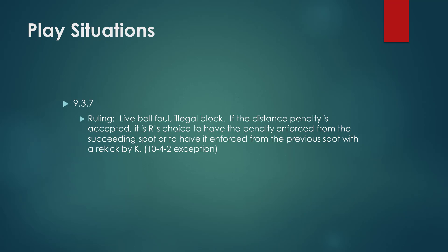If the distance penalty is accepted, it is R's choice to have the penalty enforced from the succeeding spot, or enforced from the previous spot with a re-kick by Team K — that's 10-4-2 exception. This is a national point of emphasis: remember our options on fouls on K when R is next to put the ball in place. In years past we used to just decline or enforce from the previous spot, but now they have a choice of succeeding spot or re-kick. As a crew, make sure we don't forget this aspect of penalty enforcement.